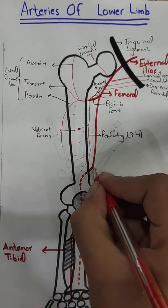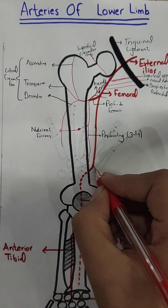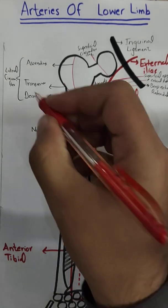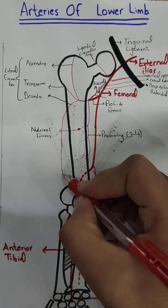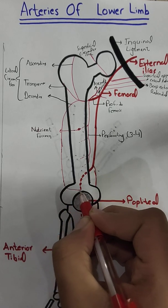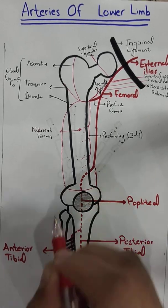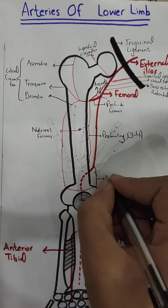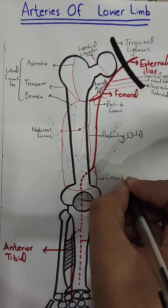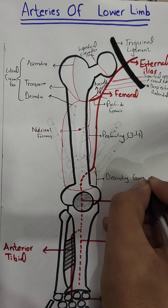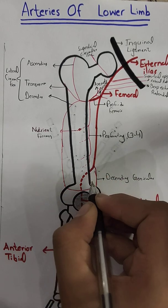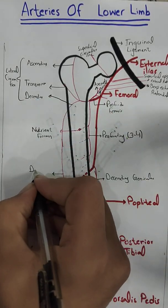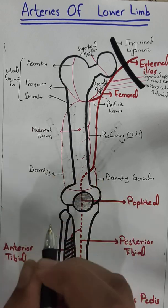At the point where the femoral artery moves posteriorly toward the knee, it gives off the descending genicular branch. This anastomoses with the descending branch of the lateral circumflex artery here. We label them: this was the descending genicular, which is a branch of the femoral artery, and this was the descending branch of the lateral circumflex.